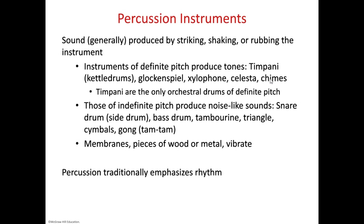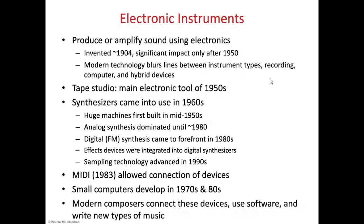Typically percussion is used to emphasize rhythm, especially the indefinite pitch instruments. The pitched percussion instruments do sometimes give us melodic ideas as well. In the orchestra we typically have strings, woodwinds, brass, and percussion — those are the four. Keyboard instruments — like the piano, organ, and harpsichord, which we'll talk about in the Baroque era — use an actual keyboard to play them. Electronic keyboards are a somewhat separate category of instruments.